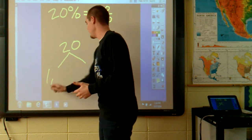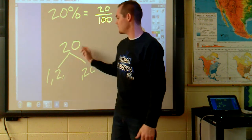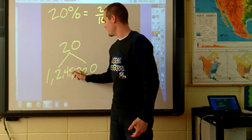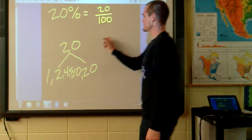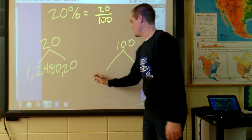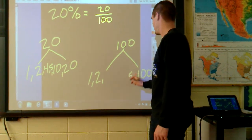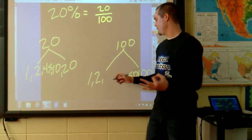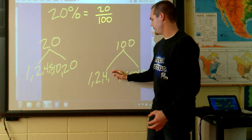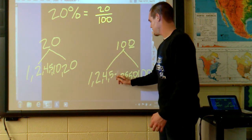Let's start with 20%. We have factors 1 and 20. This number ends in a 0 and it's even, so we divide it by 2. 2 times 10 is 20. The two other factors that go into it are 4 and 5. For the factors of 100, we find 1 and 100. This number is even: 2 times 50. It's not divisible by 3. One-fourth of 100 is 25, so 4 times 25. It ends in a 0, so I know it's divisible by 5: 5 times 20.